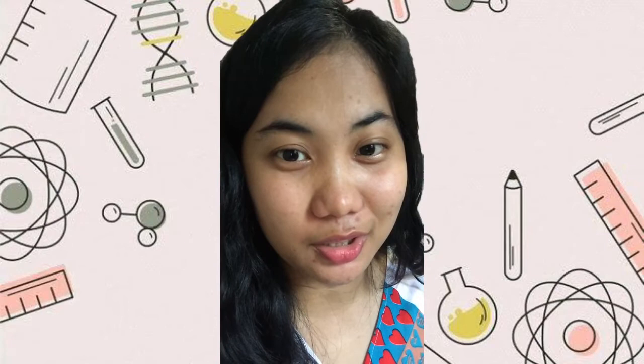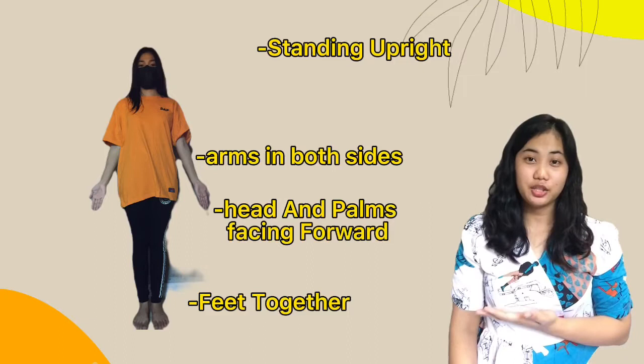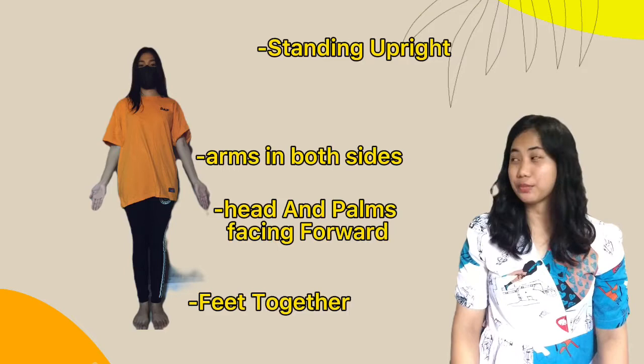So in anatomical position, you are standing upright. Your arms are on both sides of your body. Your head and your palms should be facing forward, and your feet are together. Using this anatomical position or standard position, we can easily identify the body structures.